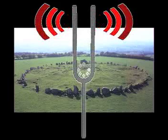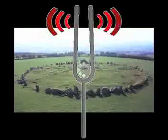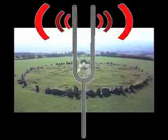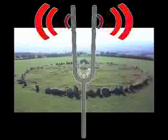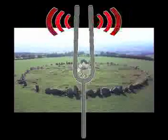Sound waves enter the ear, causing changes in air pressure in the auditory canal. The eardrum vibrates, and the waves are amplified and transmitted by the middle ear to a membrane in the wall of the cochlea.